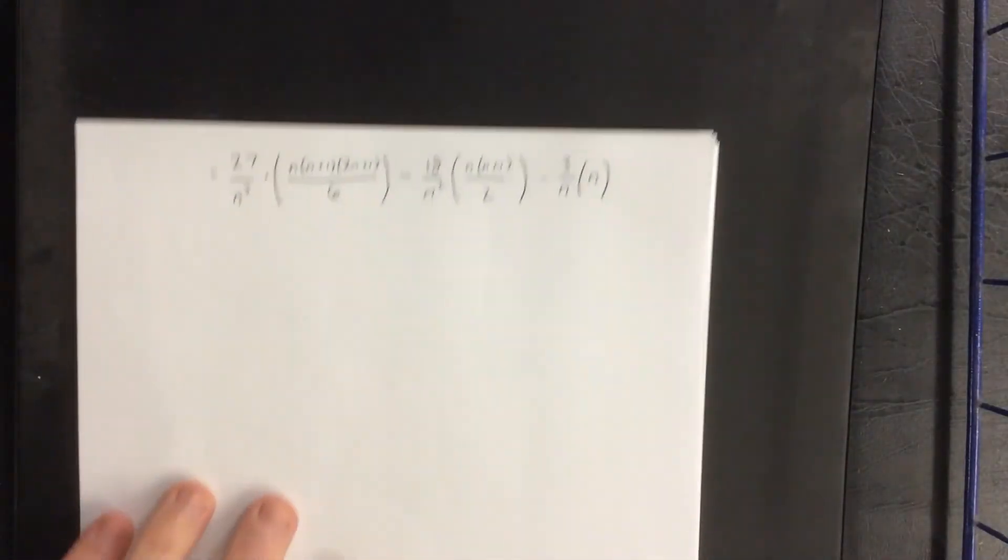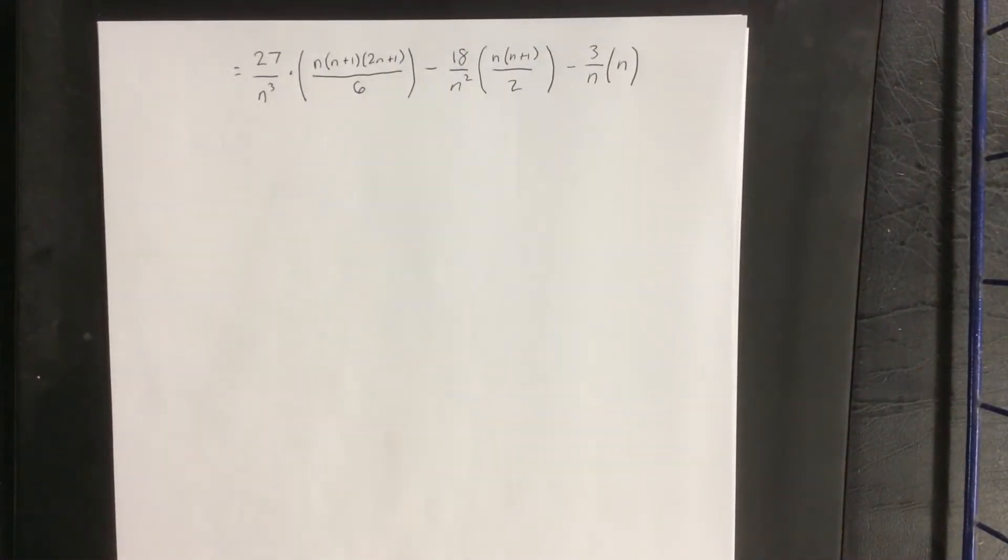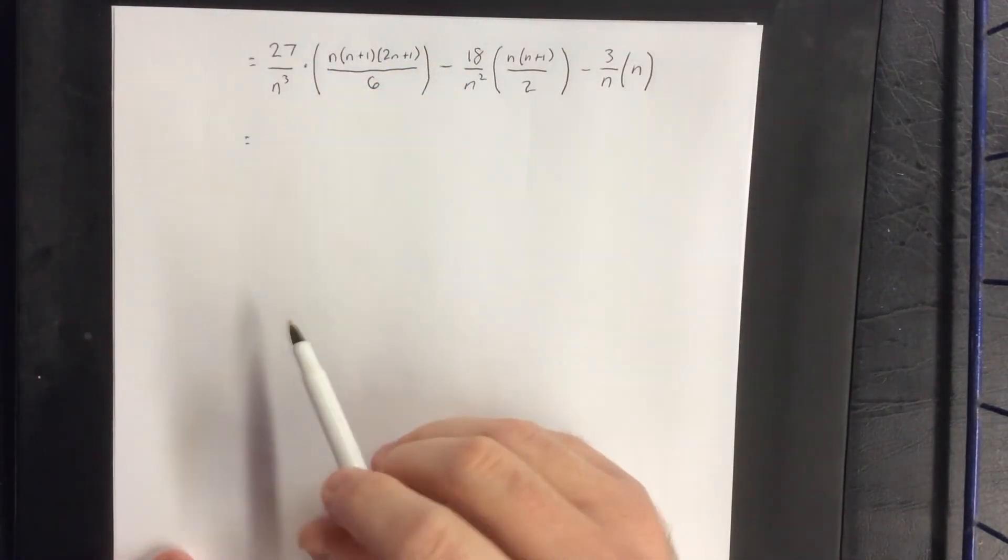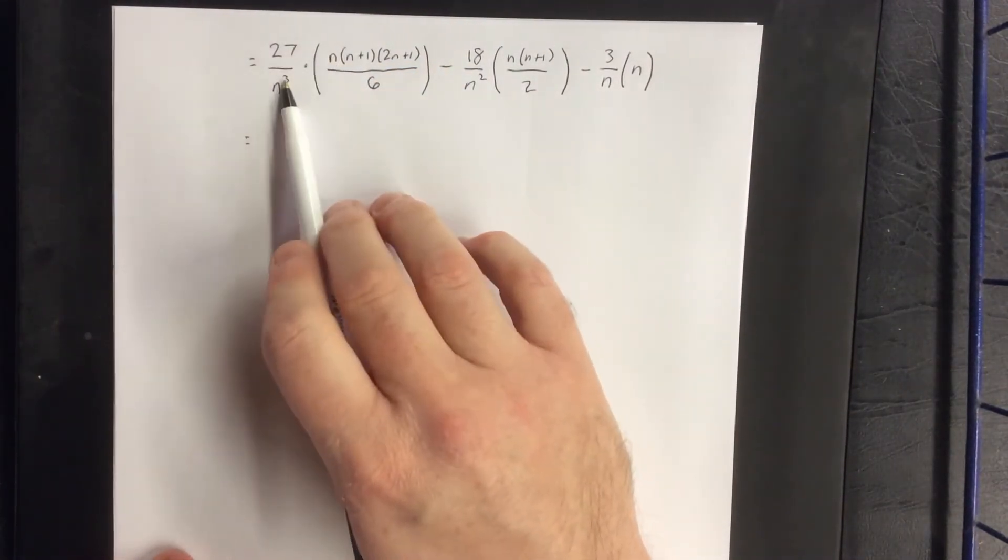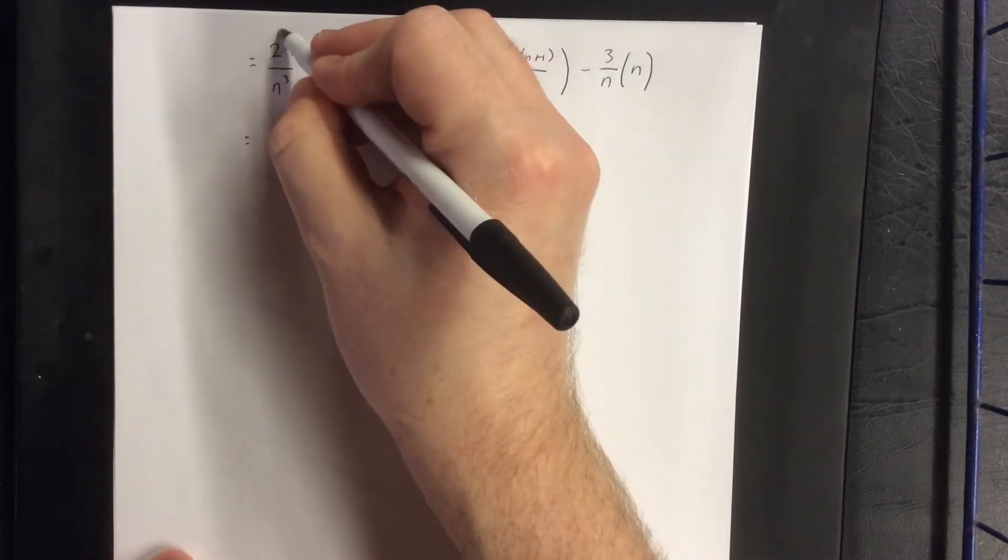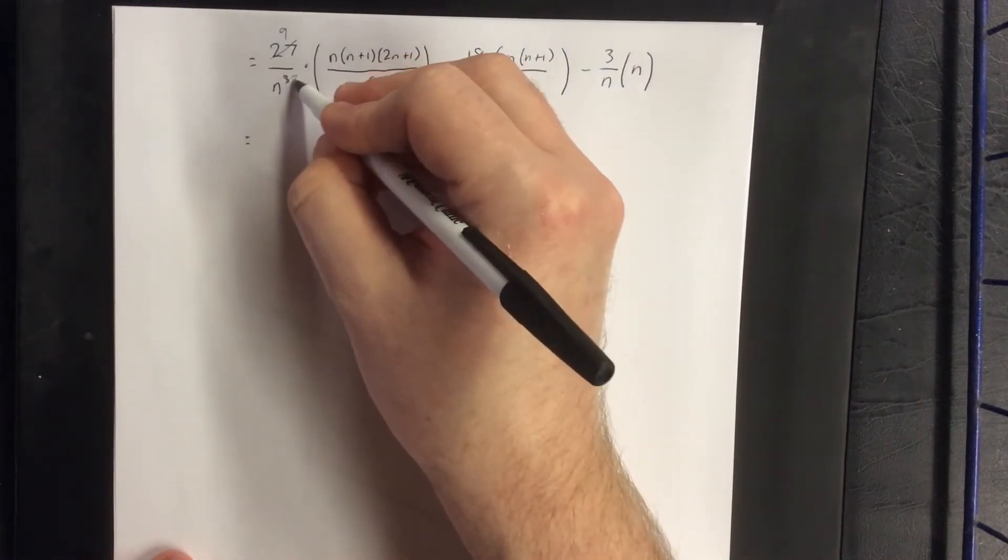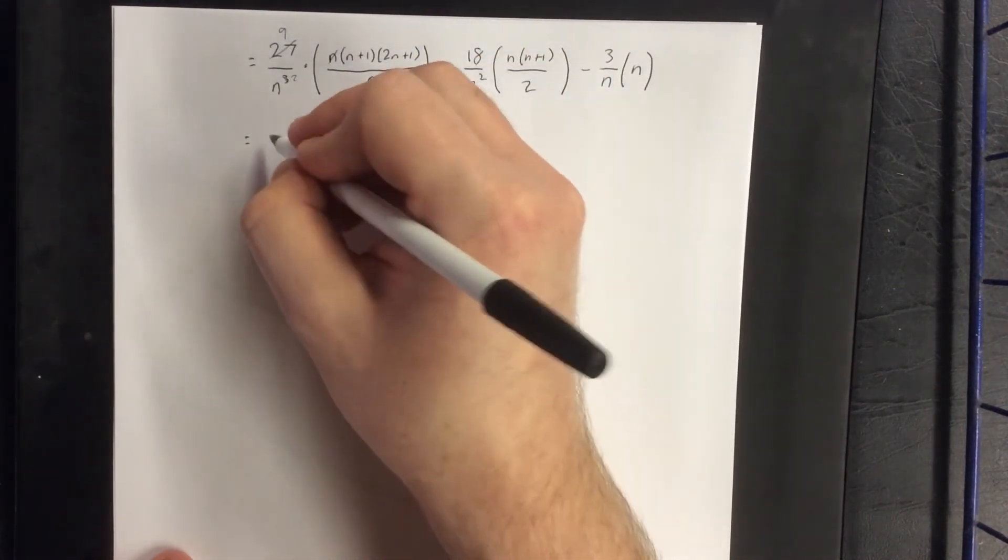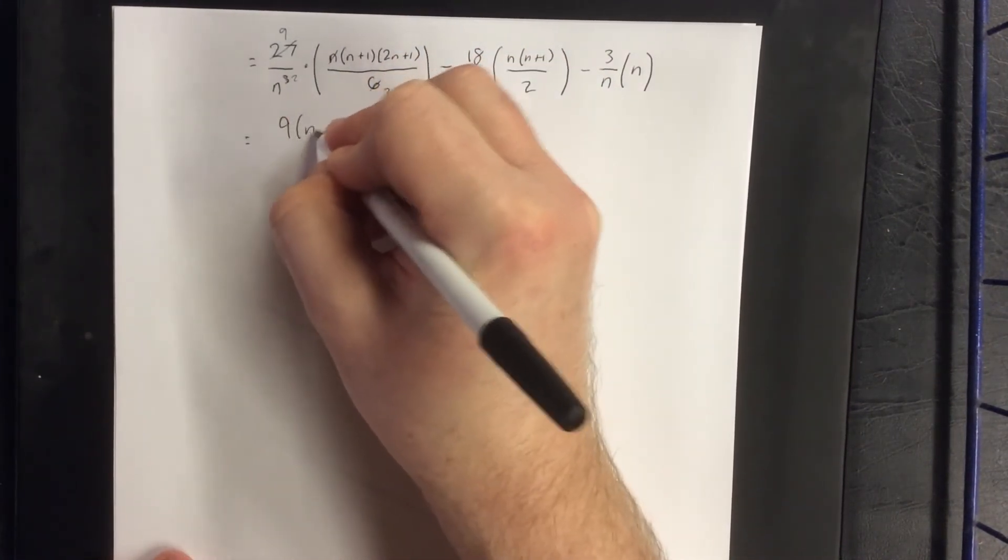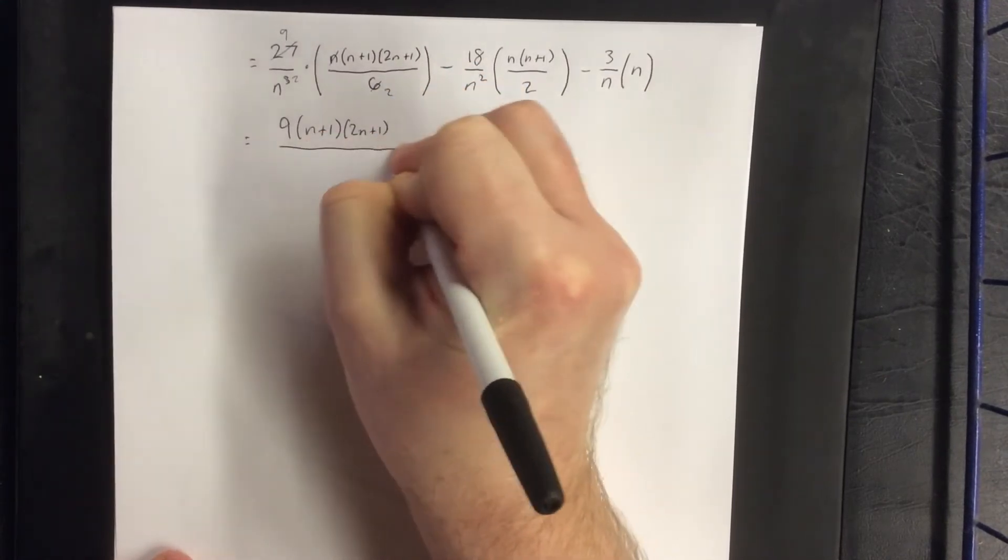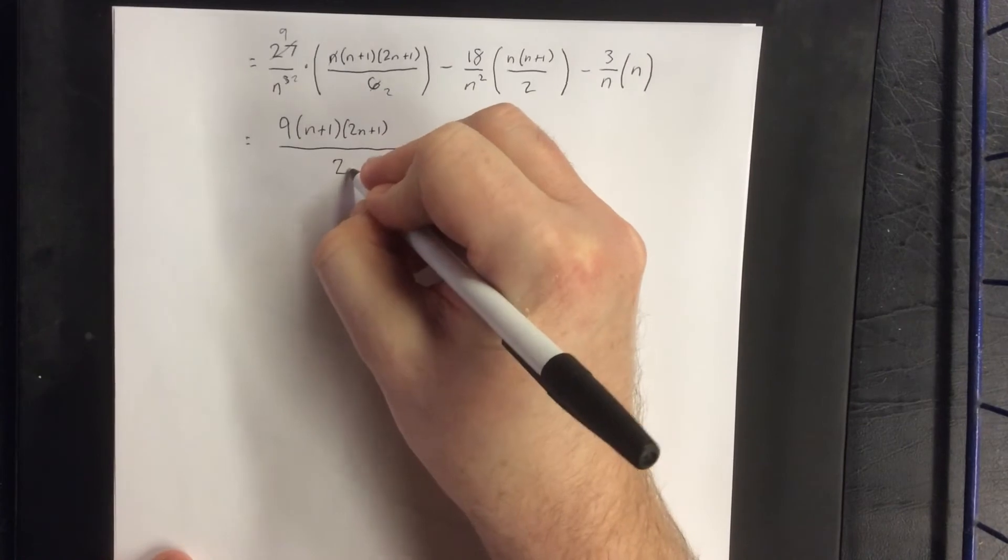Hopefully it's fairly obvious to everybody that there is a lot of algebraic simplification that can take place here. I'm going to do some of that simplification. So first off, we can cancel an n with an n, and the 27 over 6 will reduce down to 9 over 2. We can reduce the n to a square, so we'll call this 9 times (n plus 1) times (2n plus 1) all over 2n squared.